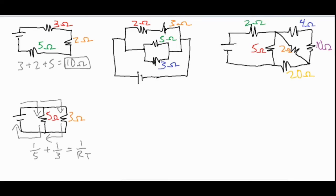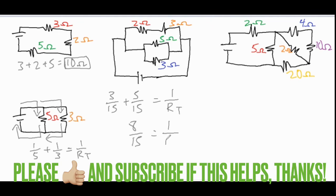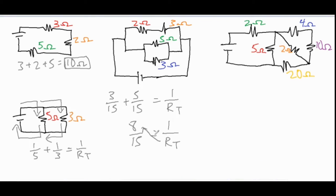You can add up the fractions manually by finding the lowest common denominator. So one over five becomes three over fifteen, and one over three becomes five over fifteen. Set that equal to one over R_T, sum those up to get eight over fifteen, and then invert that fraction by cross-multiplying to get R_T equals 15 over 8 ohms.